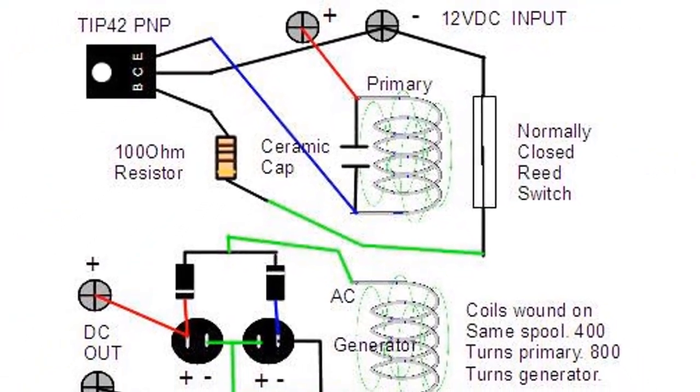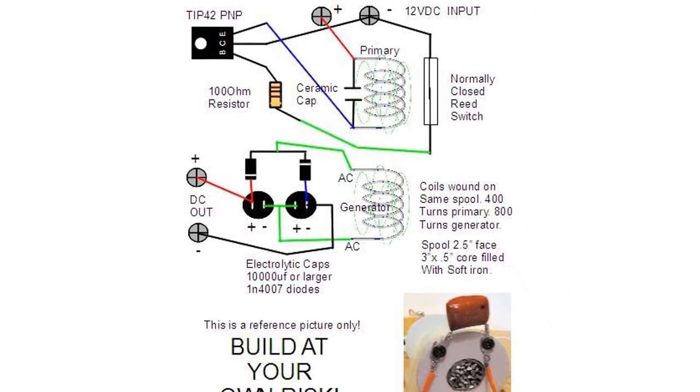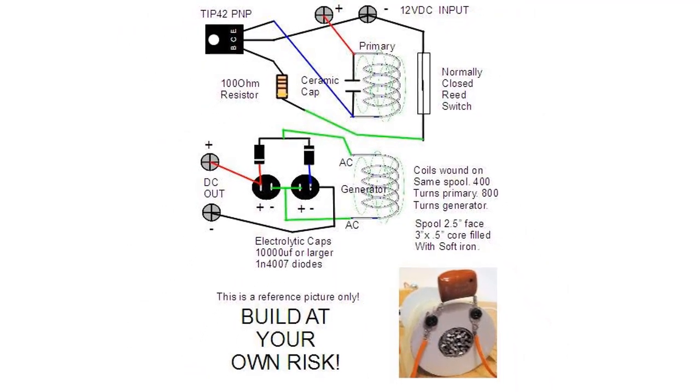Bifiler coils are used in different versions of the magnifying transmitter to generate radiant energy. The coils are made up of two wires of equal length that are twisted together and then coiled around the former.